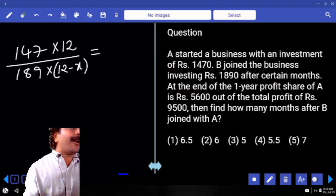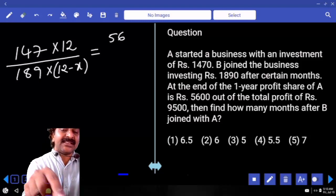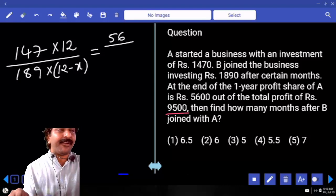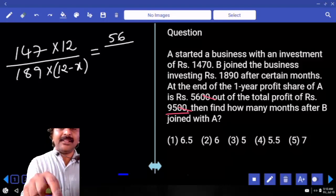So this is profit share of A and B. A is getting 5600 out of 9500 only. Here also two zeros, two zeros common. If out of 95, if A gets 56, how much B gets? 39.